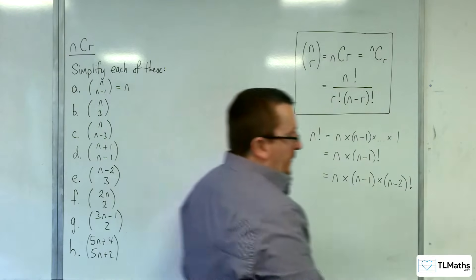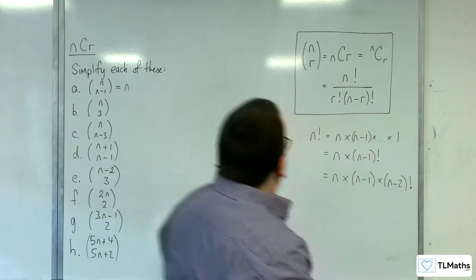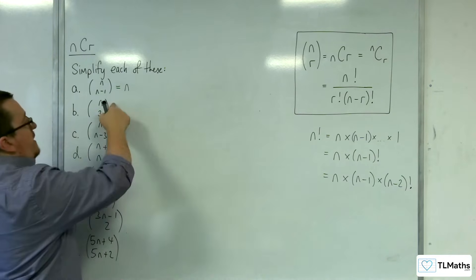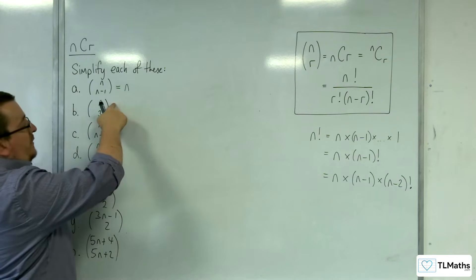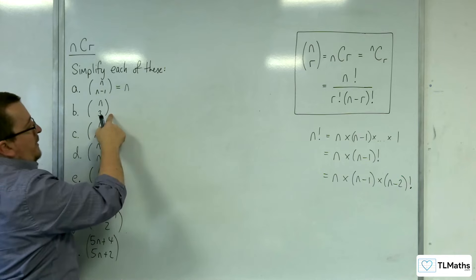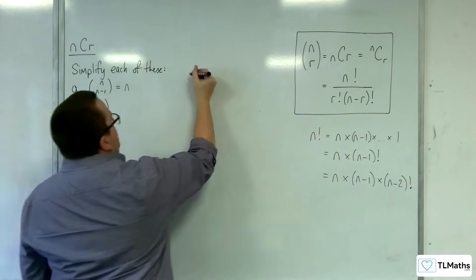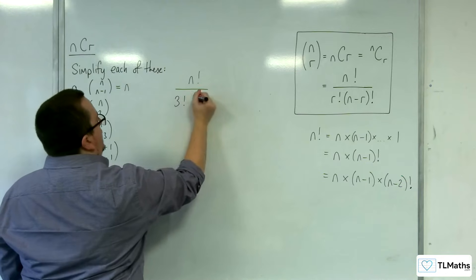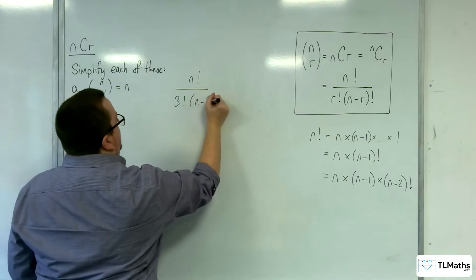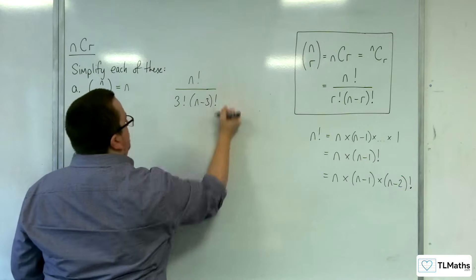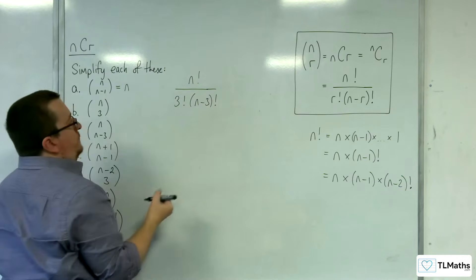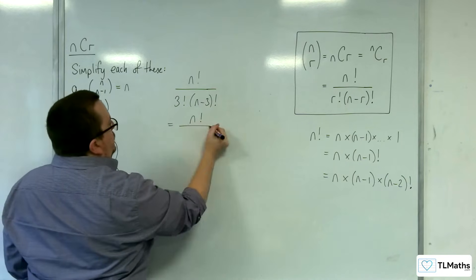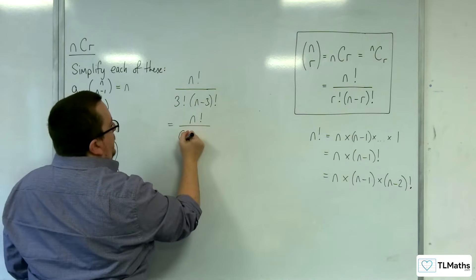Let's take a look at the next one. Part B: N choose 3. The N stays as it is in the formula, and R becomes 3. So we would have N factorial over 3 factorial times N-3 factorial. And 3 factorial is just 6 — that's 3 times 2 times 1.